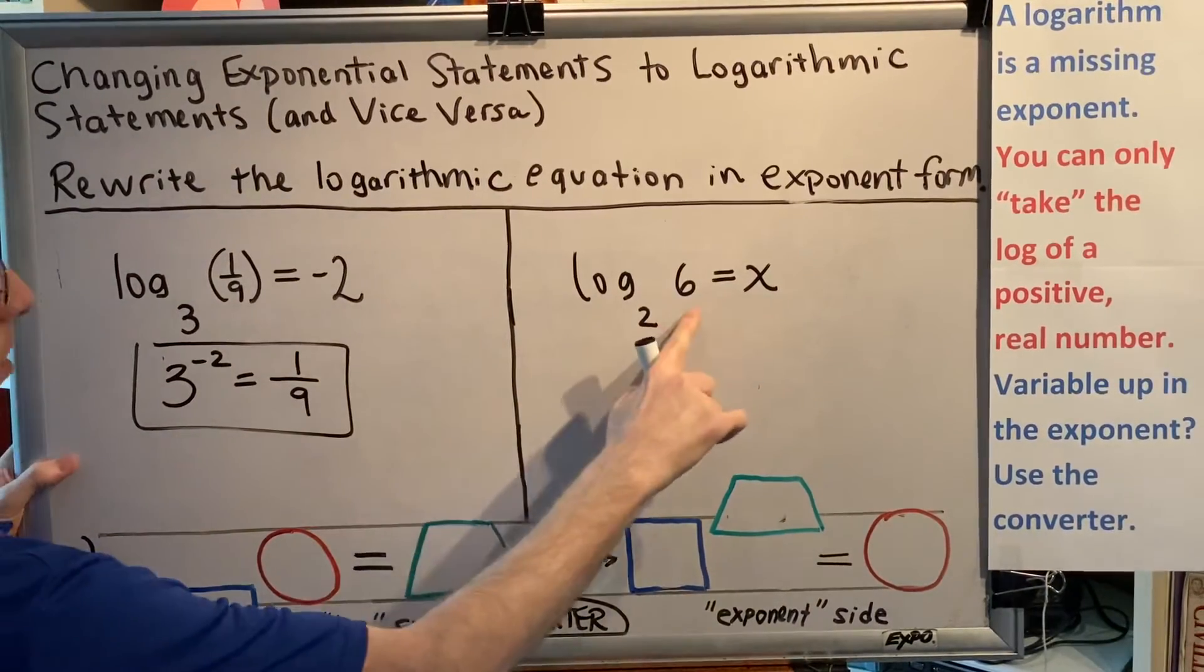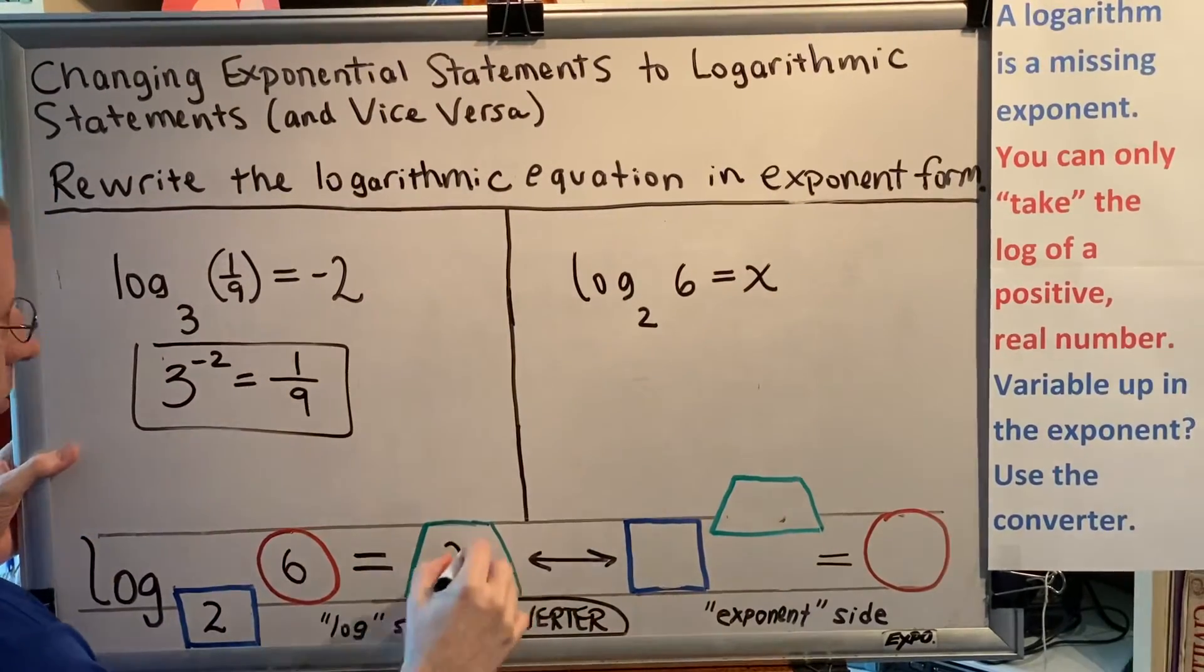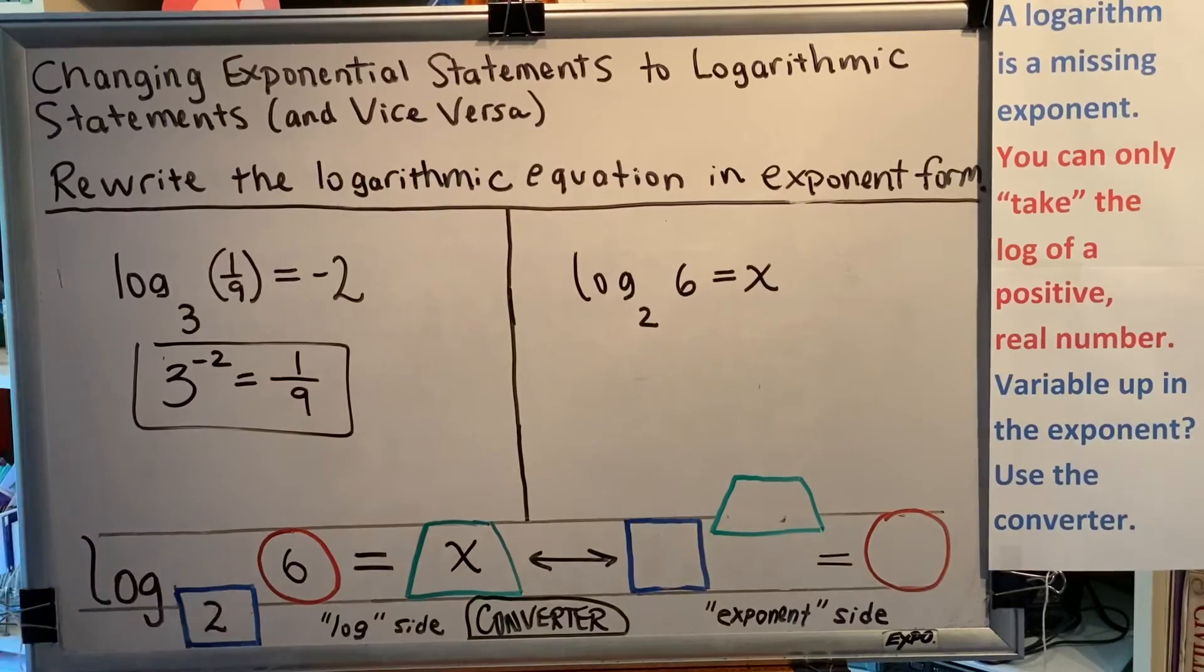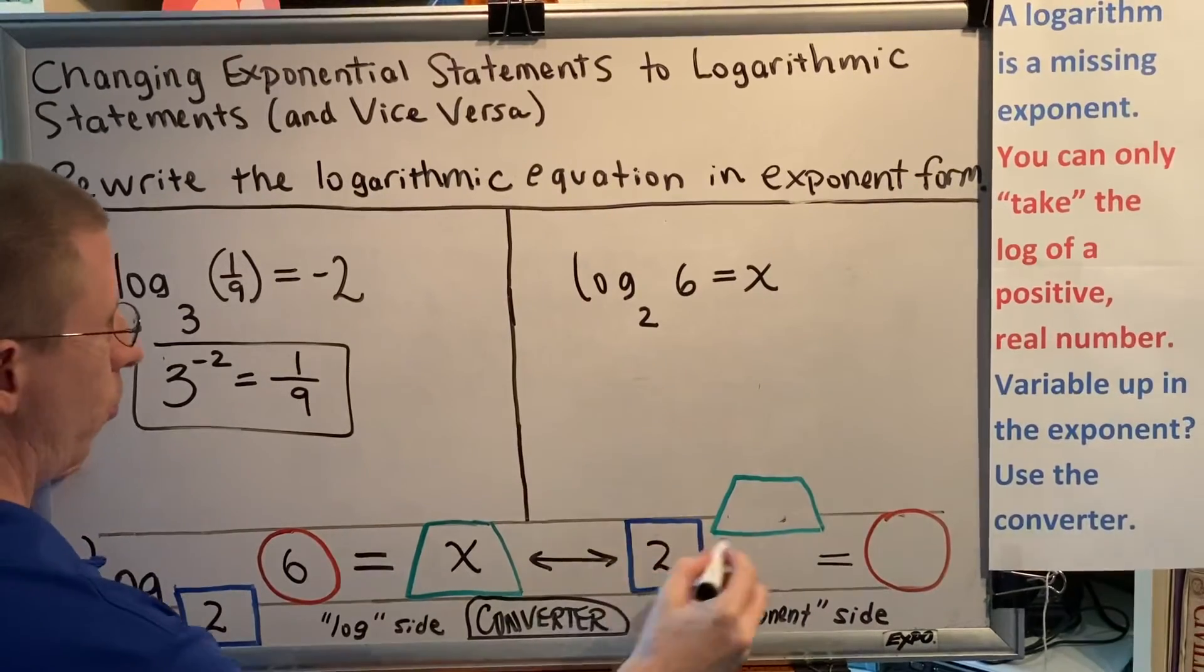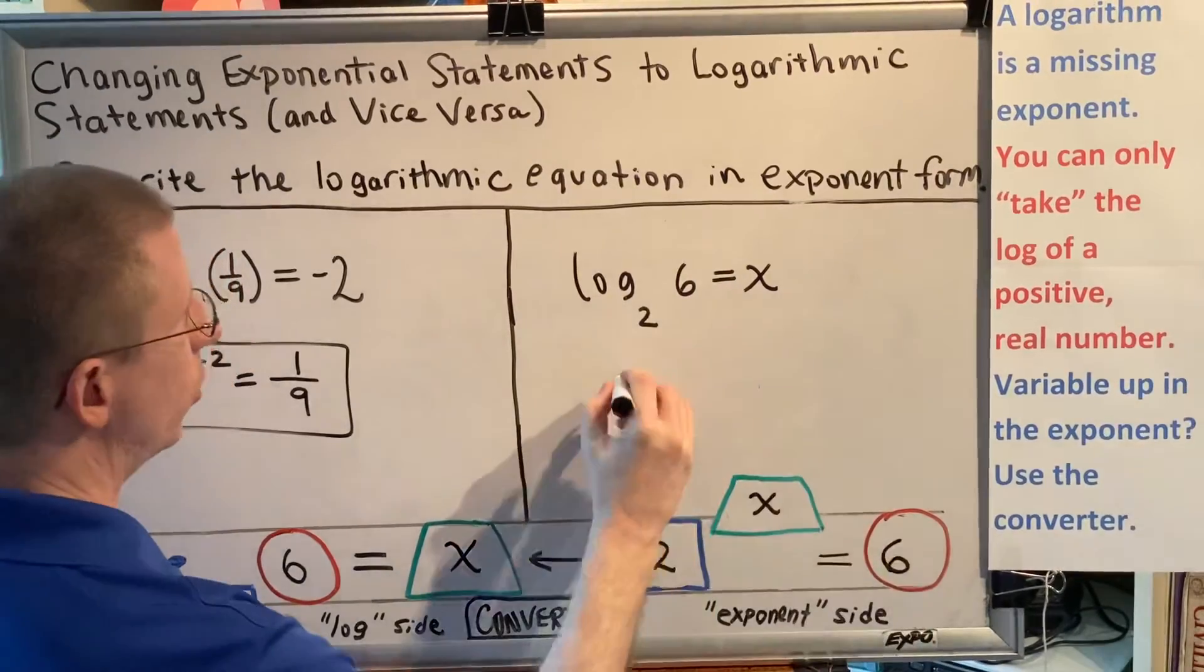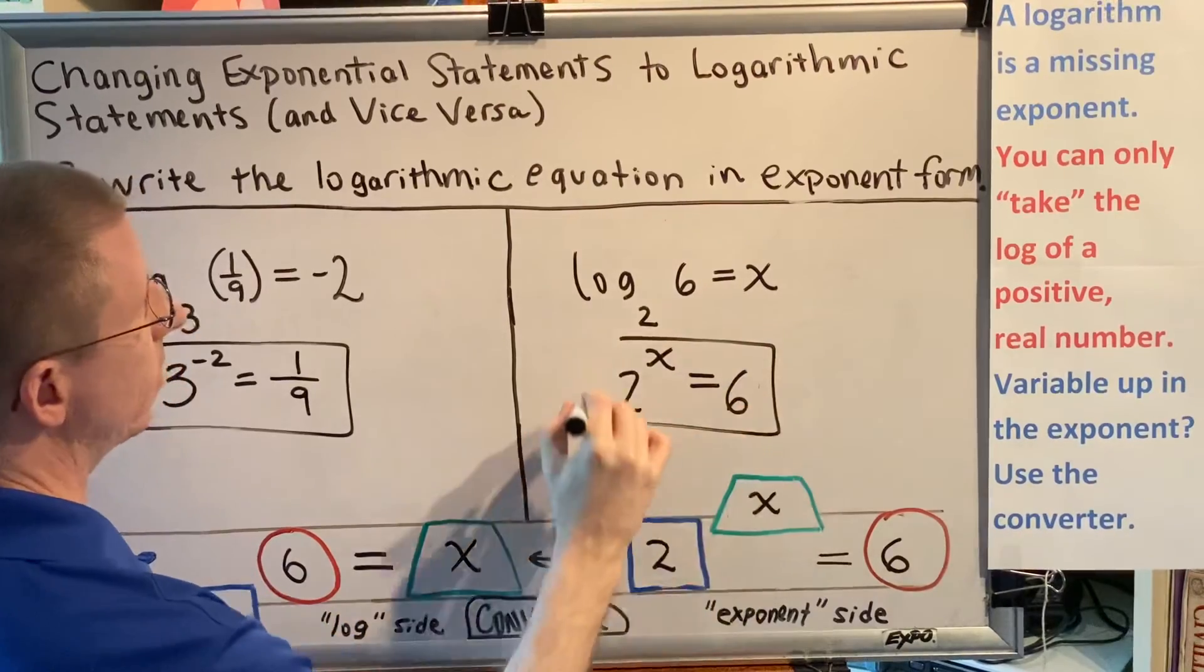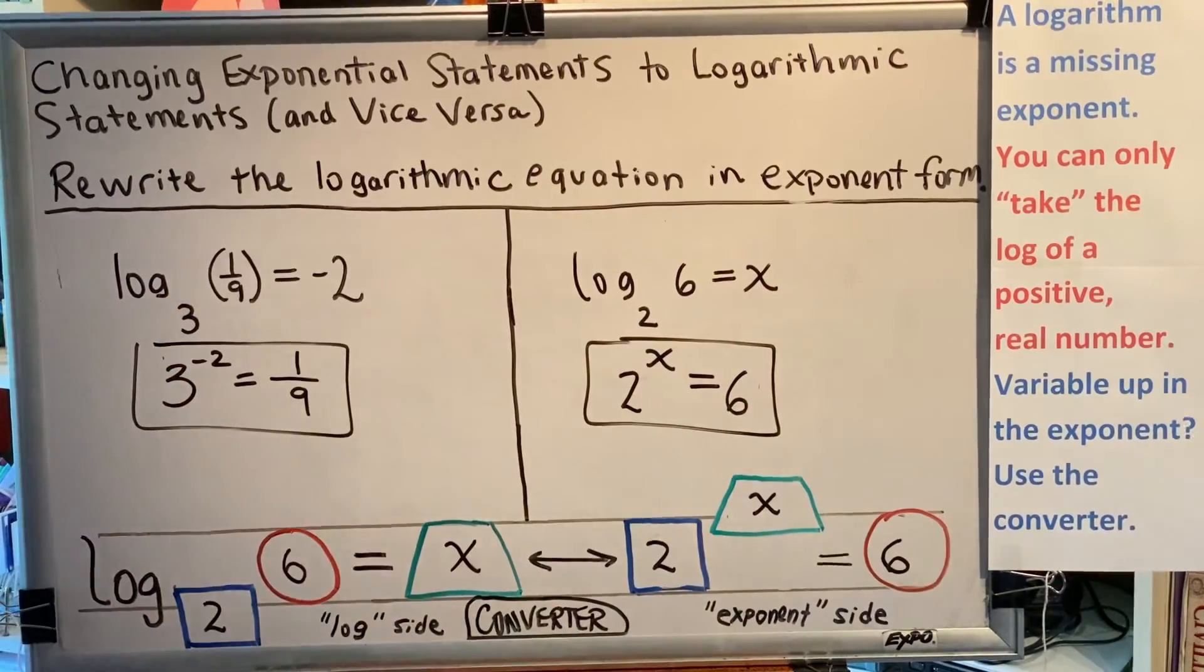The argument is 6, that goes in the red circle. The exponent is x, that goes in the green trapezoid. Now matching up the colors and shapes, we get 2 raised to the x power equals 6. This is our answer for this second problem.